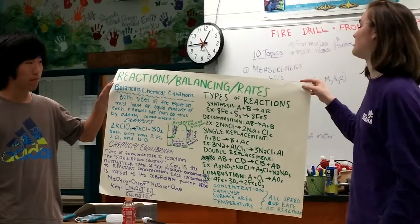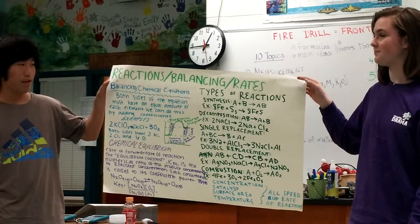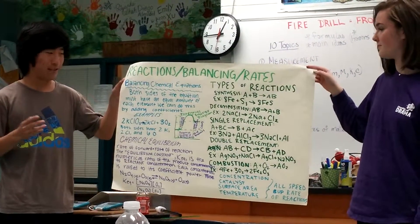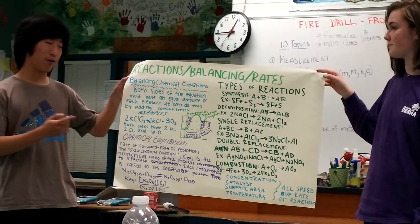Chemical reactions, balancing equations, rates of reaction, and chemical equilibrium. To have a balanced equation, both sides of the equation have to have an equal amount of each element or compound, and we do this by adding a coefficient frequency.